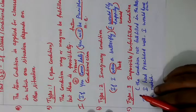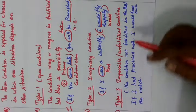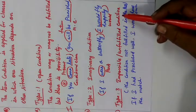Now see Type 3 — the third type. This is the impossible condition, that is, the unfulfilled condition.